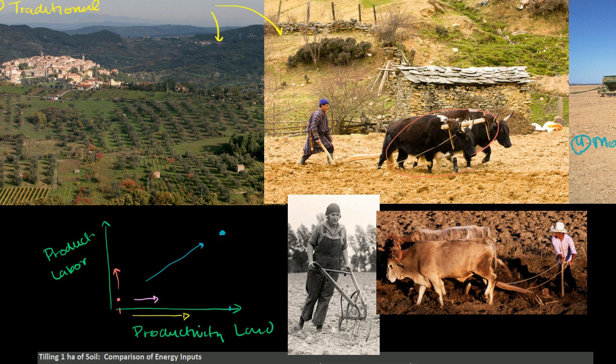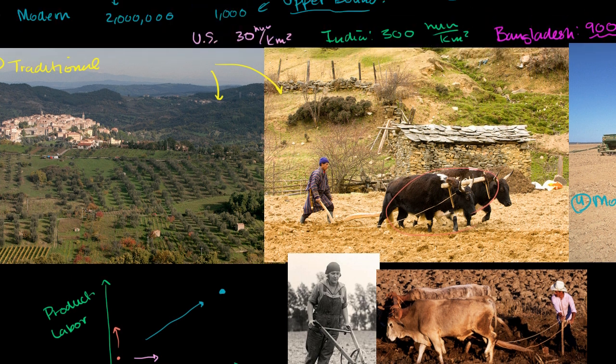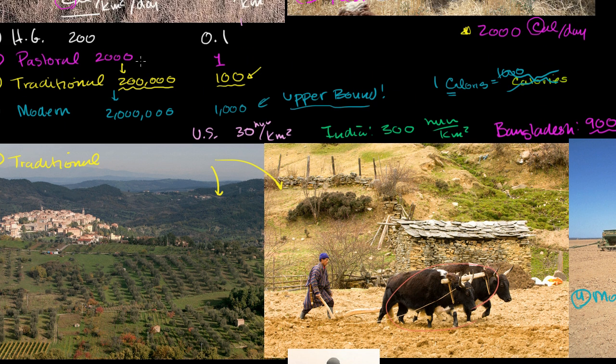In the last video, we talked about how humans over time have gotten better at getting more calories out of a given unit of land. I want to emphasize these numbers I came up with were picked to make the math fairly simple. I don't want you to think that a square kilometer can support exactly 1,000 people today. It depends on what the land is like, how much you're using for agriculture,